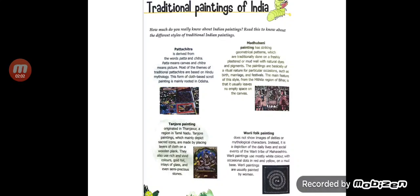Next is Tanjore painting, which originated in Tanjore, a region in Tamil Nadu. Tanjore paintings mainly depict sacred icons and are made by placing layers of cloth on a wooden plank. They also use rich and vivid colors, gold foil, inlays of glass, and even semi-precious stones.